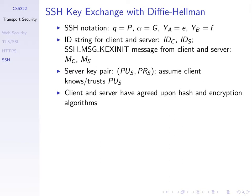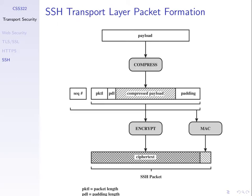Secure Shell also lets us do other things beyond remote login. Here's how an SSH packet is structured: the payload is the plain text message we want to send. We compress it, may add padding to make it the right size for encryption, add a header with a sequence number, encrypt it, and calculate a MAC. We then send the ciphertext and the MAC. We saw this in the capture — ciphertext and a MAC value.